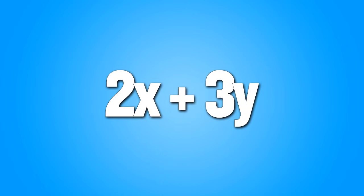We're left with 2x plus 3y. Our final check is to see if there are any more teammates after we simplify. Are there any more? No, because they don't have the same letter. We're good — we can't do anything else.